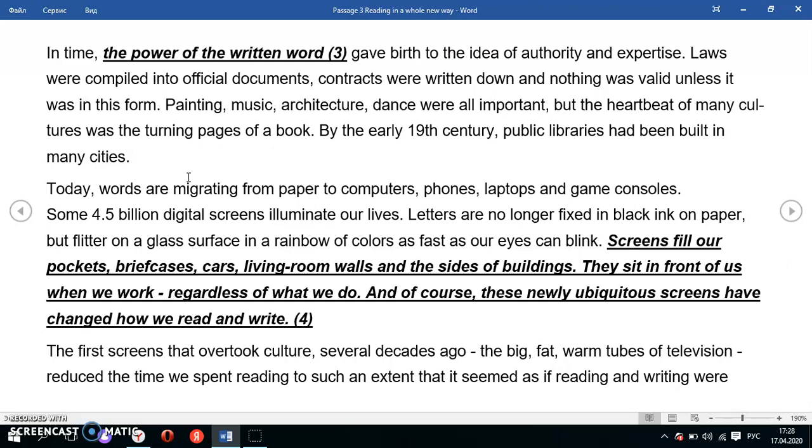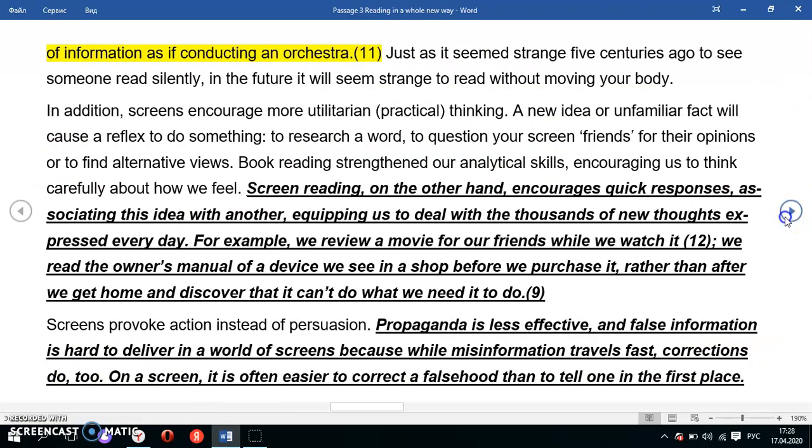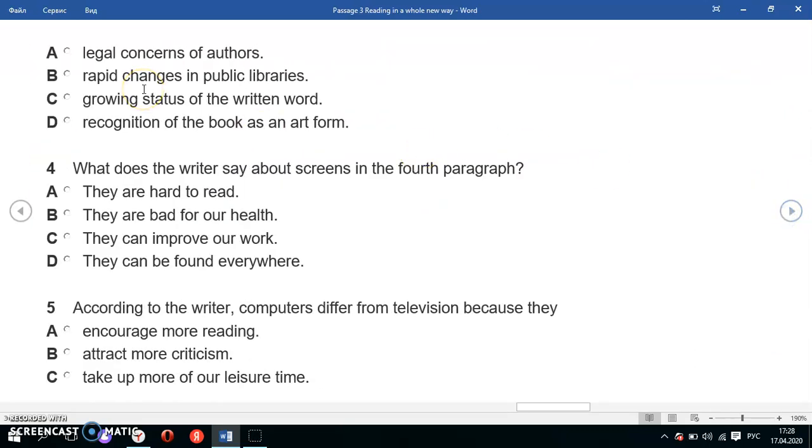Now let's choose from the options. Legal concerns of authors - no, we don't have information about legal worries. Rapid changes in public libraries - no, they just said public libraries were opened but not about rapid changes. Growing status of the written word - this is exactly the option we need because in the first sentence they said the written words became more important. Recognition of the book as an art form - no, they didn't say that. The correct answer is C.